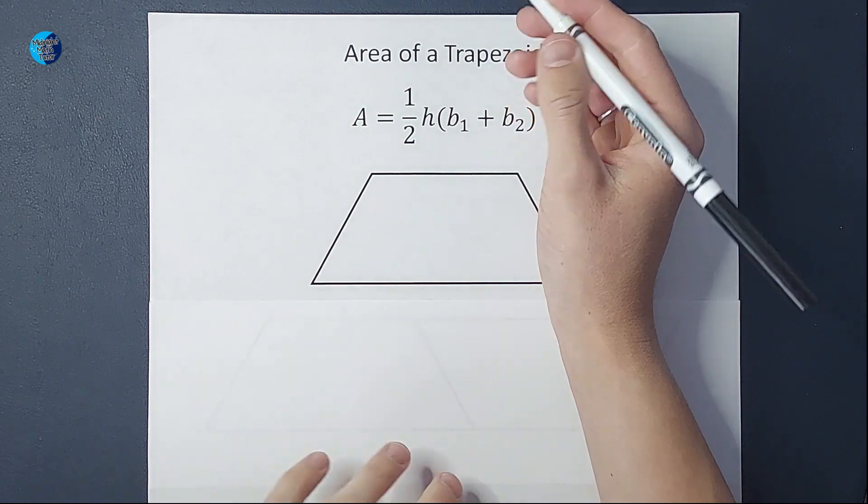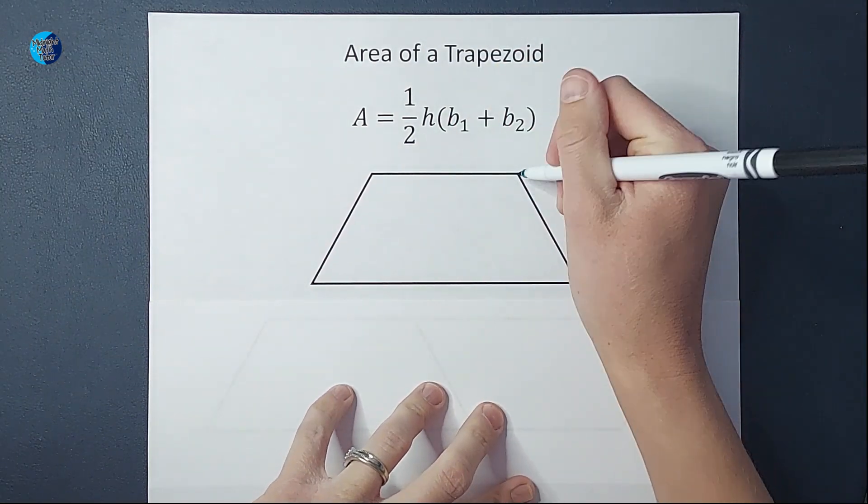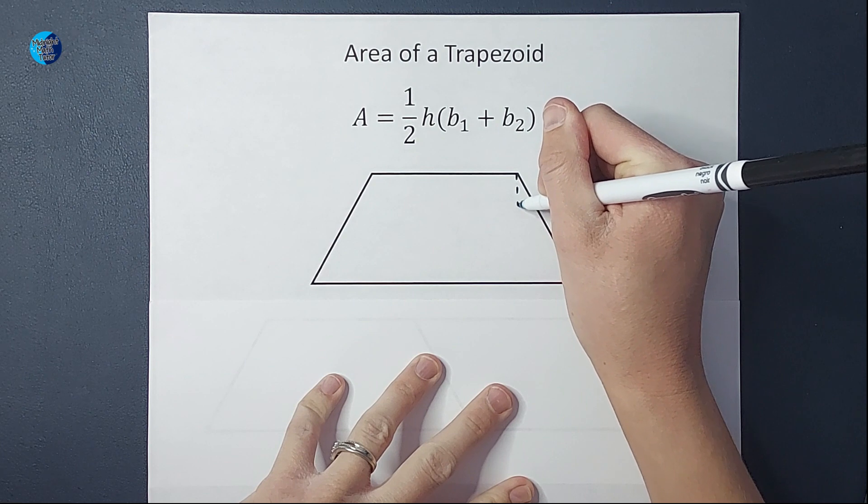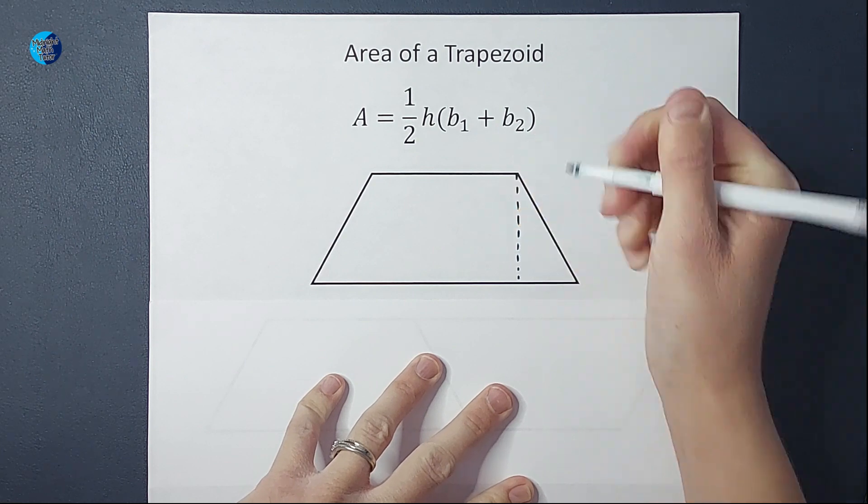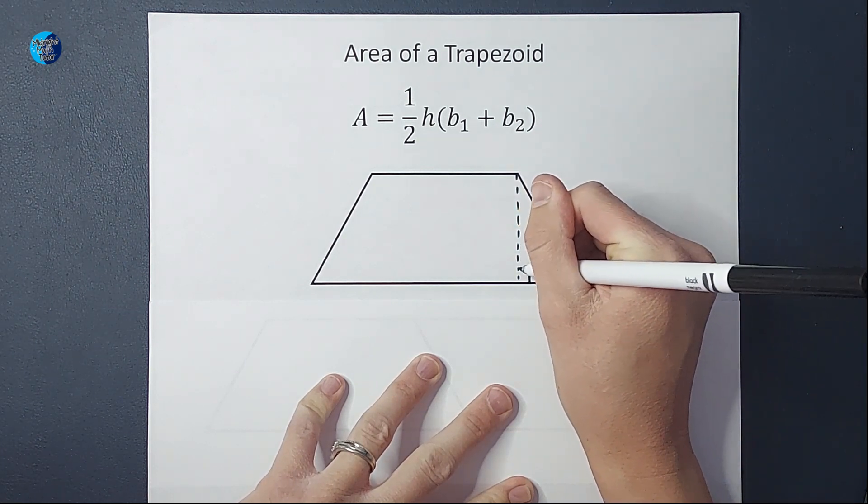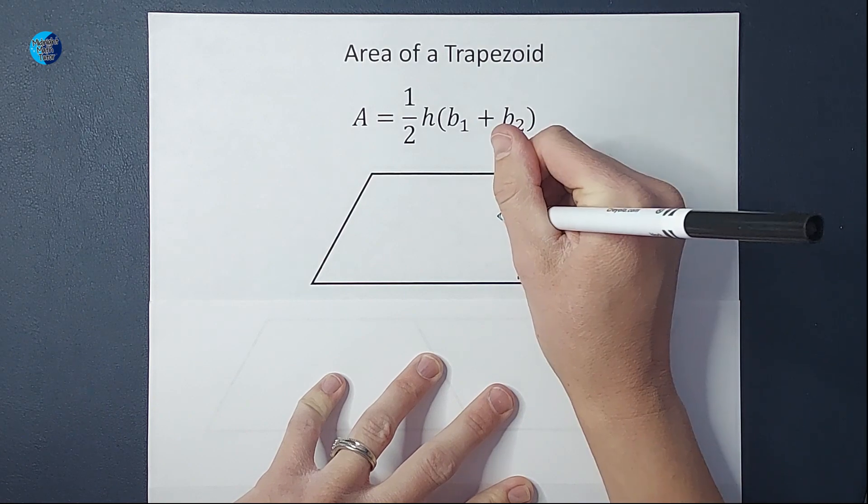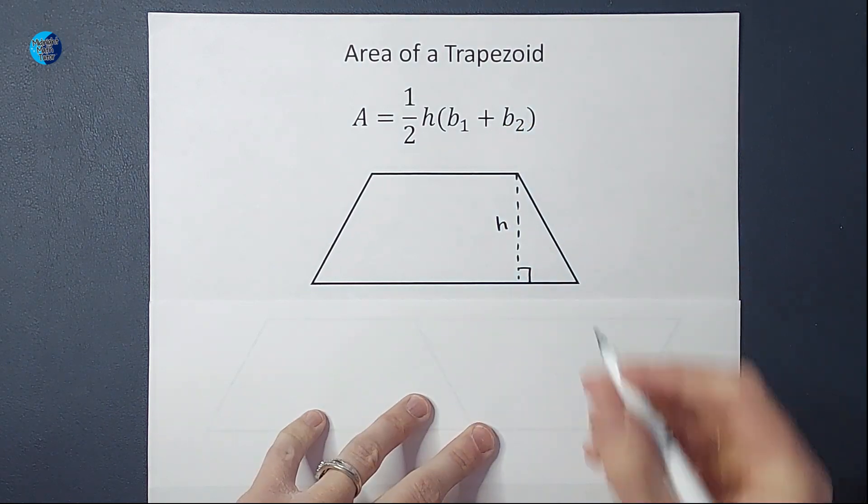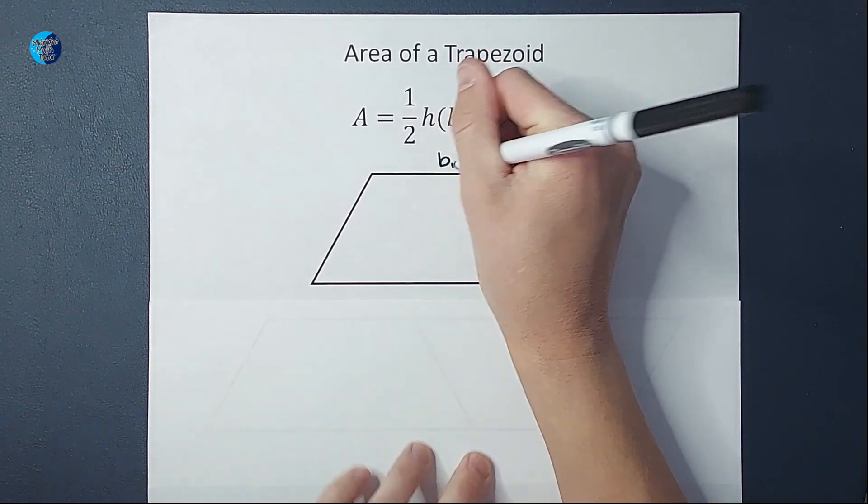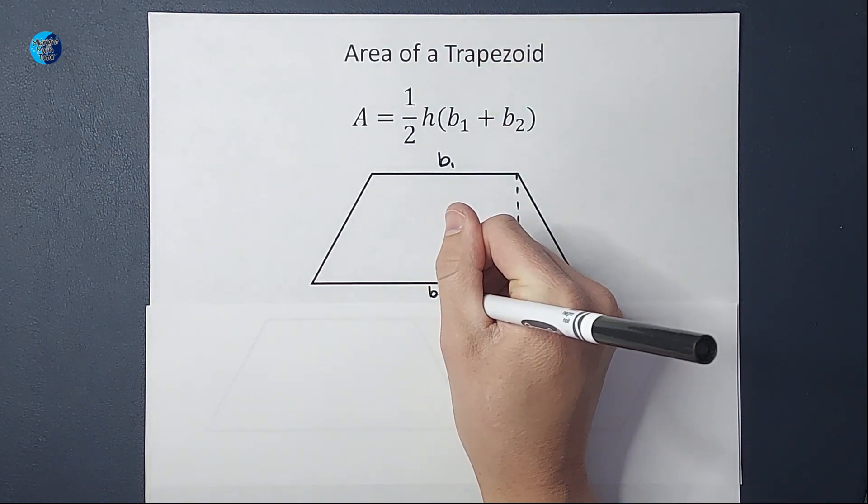Let's go ahead and label these things. So my height is from one base to the other, kind of like this, and it needs to be a right angle. That is my height. Now I have the two bases, base one and base two.